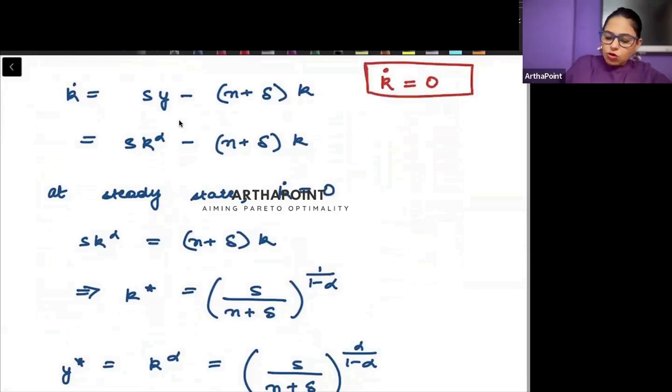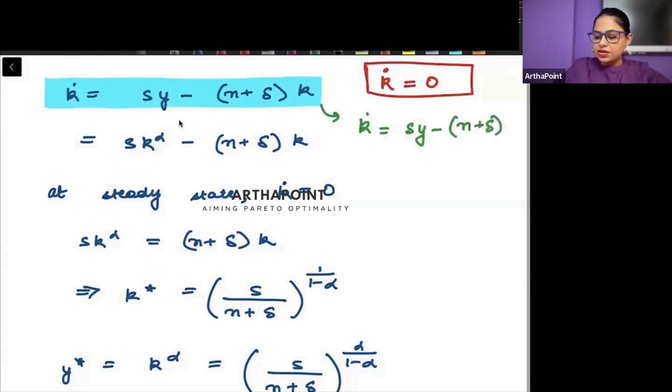Our equation of change in capital was given by this. We had written that k dot is equal to investment minus n plus delta into k. We had derived this equation. We know that at steady state this k dot will be 0. So, sy will be equal to n plus delta k.